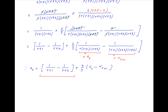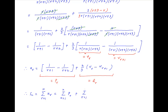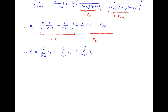Let's denote the expression in the first bracket by p_r and let's denote the second term by q_r. Therefore, S_n, which is the sum of the first n terms of the given series, is equal to summation of p_r plus summation of q_r, where r goes from 1 to n.